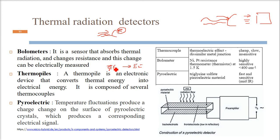Then we have pyroelectric. The temperature fluctuation is produced by the charge change on the surface of pyroelectric crystal. This is a pyroelectric material. Radiation is coming, and the surface of pyroelectric crystals, the change will be in the charge because of temperature fluctuations, and this can be changed into electrical signals. Thermocouple: thermoelectric effect, dissimilar metal junction, it's cheap, slow, and insensitive. Bolometer is quite sensitive. Nickel platinum resistance thermometer thermistor at 1.5 Kelvin. When we talk about pyroelectric, triglycine sulfate piezoelectric material is used, fast and sensitive, and this works in mid-IR infrared range.